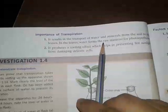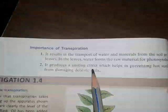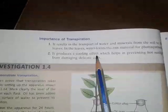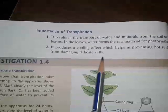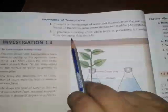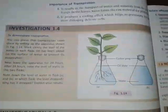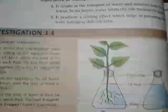Now, the importance of transpiration: it results in the transport of water and minerals from the soil to the leaves. In the leaves, water is the raw material for photosynthesis. Transpiration also produces a cooling effect which helps prevent hot sunlight from damaging delicate cells. So transpiration is also known as the cooling effect.